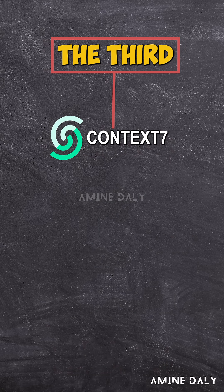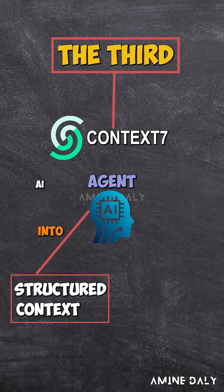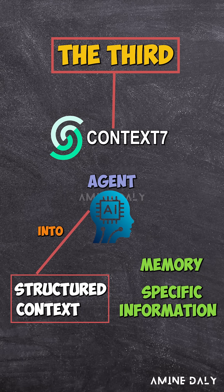The third one is Context7. This server brings structured context into your agent. It's perfect when your AI needs memory or domain-specific information.